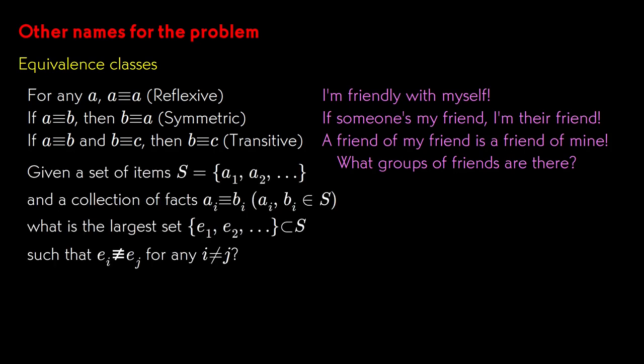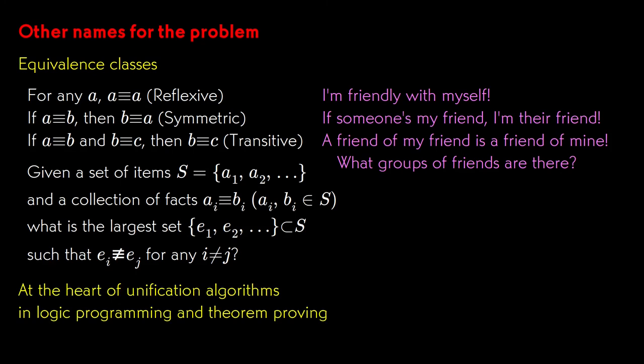Being a mathematician, you, of course, write down the problem in mathematical notation, and you call those groups the equivalence classes under the given equivalence relation. Expressed in this form, the problem is at the heart of unification algorithms, which turn up all the time in logic programming, theorem proving, and some other types of machine learning and artificial intelligence.